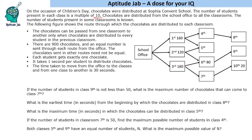The following figure shows the route through which the chocolates are distributed to each classroom. From the school office to 1st, 2nd, 3rd; then from 1st to 4th and 5th; from 2nd to 5th and 6th; from 3rd to 6th and 7th; from 4th to 8th; from 6th to 9th; and from 7th to 10th.